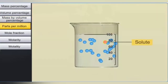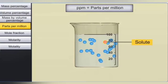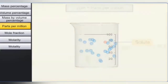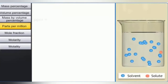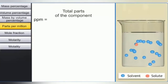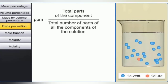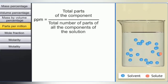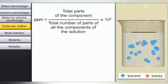When a solute present in a solution is in a very small quantity or trace amounts, its concentration is expressed as parts per million, or ppm. Parts per million is defined as the ratio of parts of the solute to one million parts of the solution. Mathematically, it is expressed as the total parts of the component divided by the total number of parts of all components of the solution, multiplied by 10 to the power of 6.